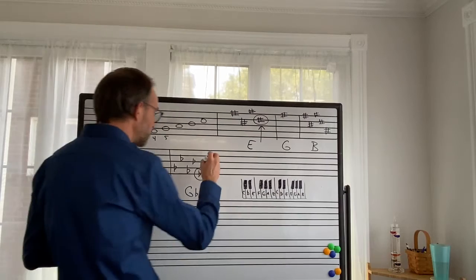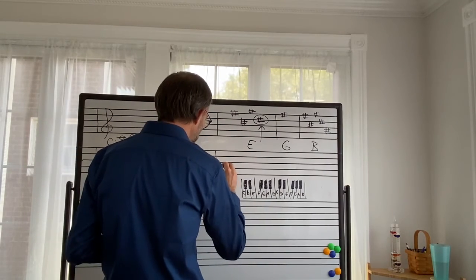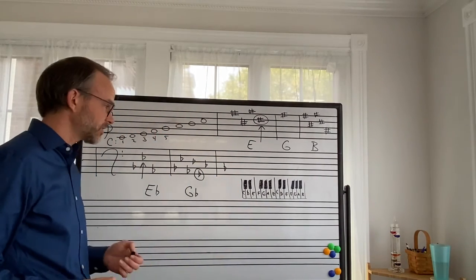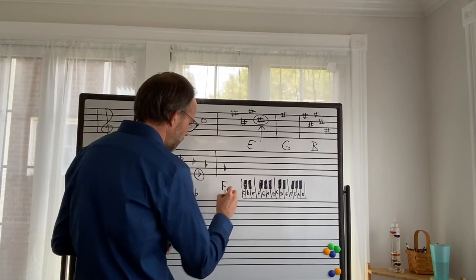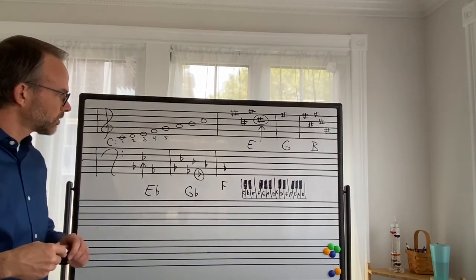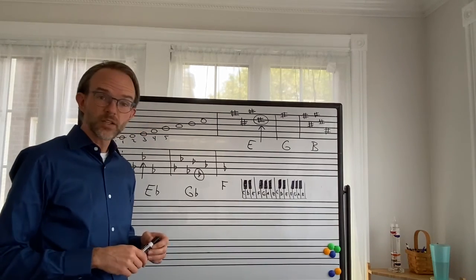So the one that doesn't work, of course, is the one with only one flat. There's not a second to last flat. You have to memorize that one. That one is F. So that's how you can think of key signatures. Thank you.